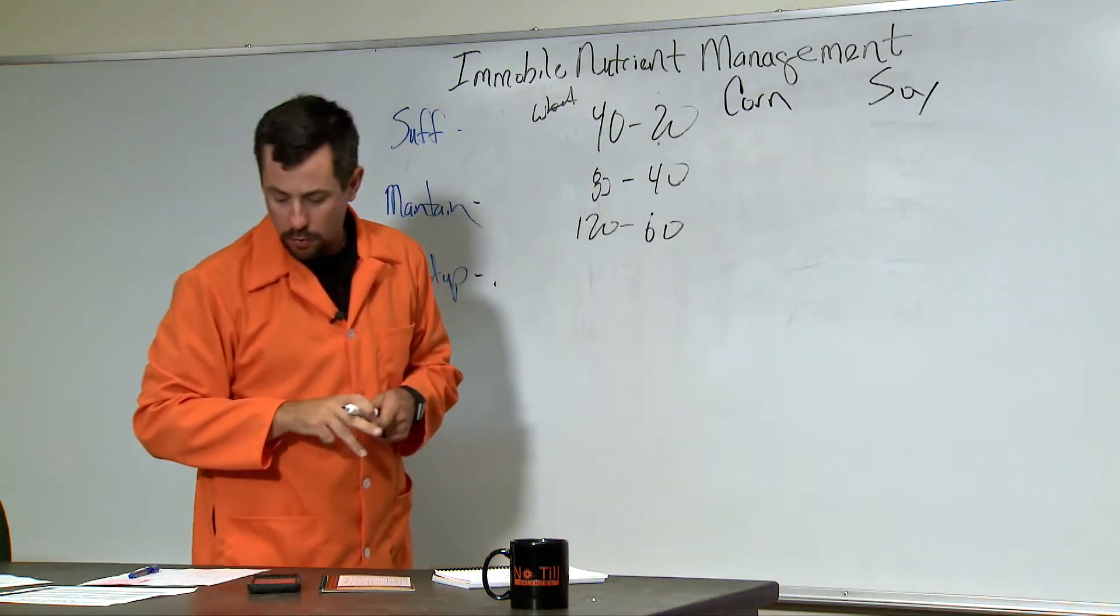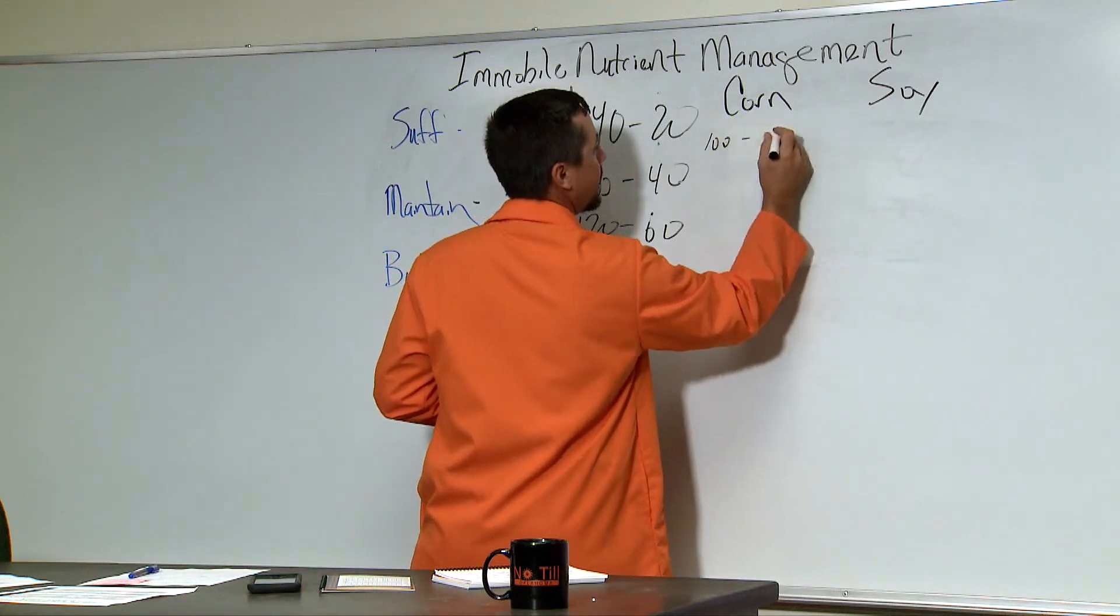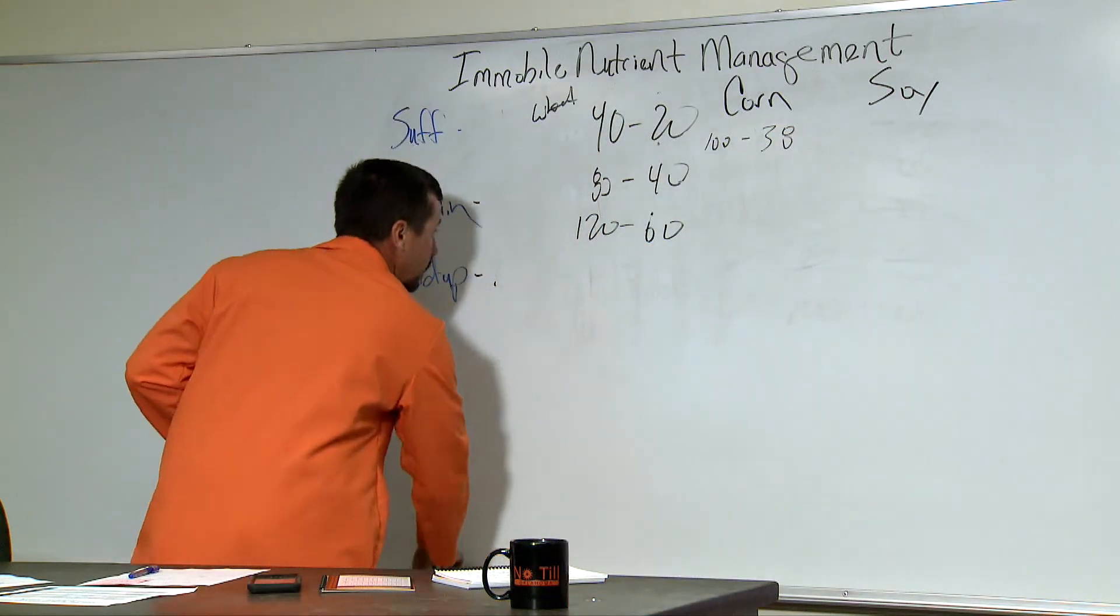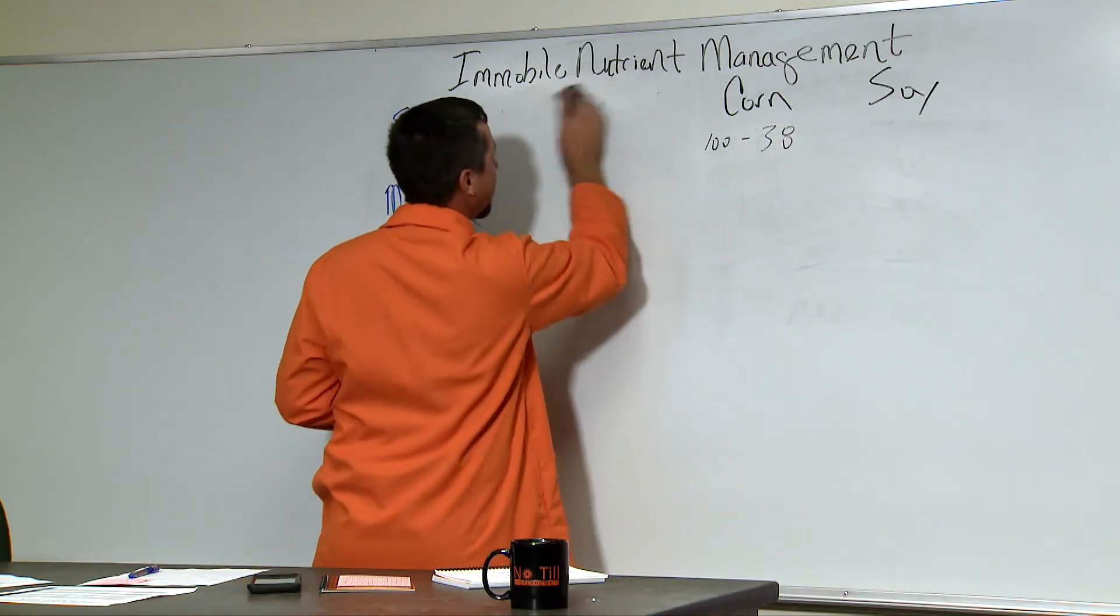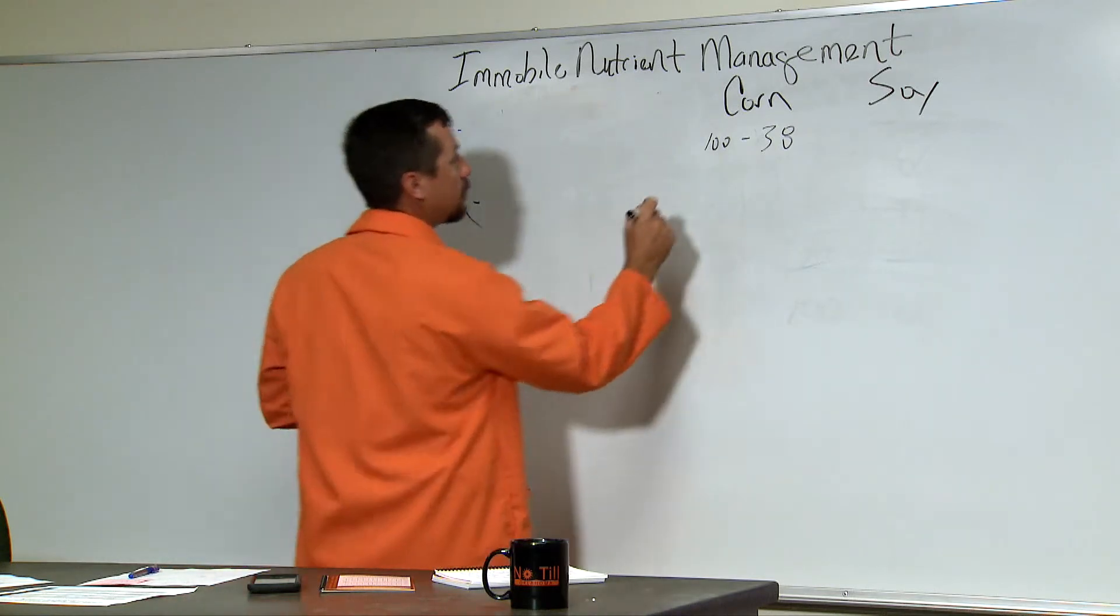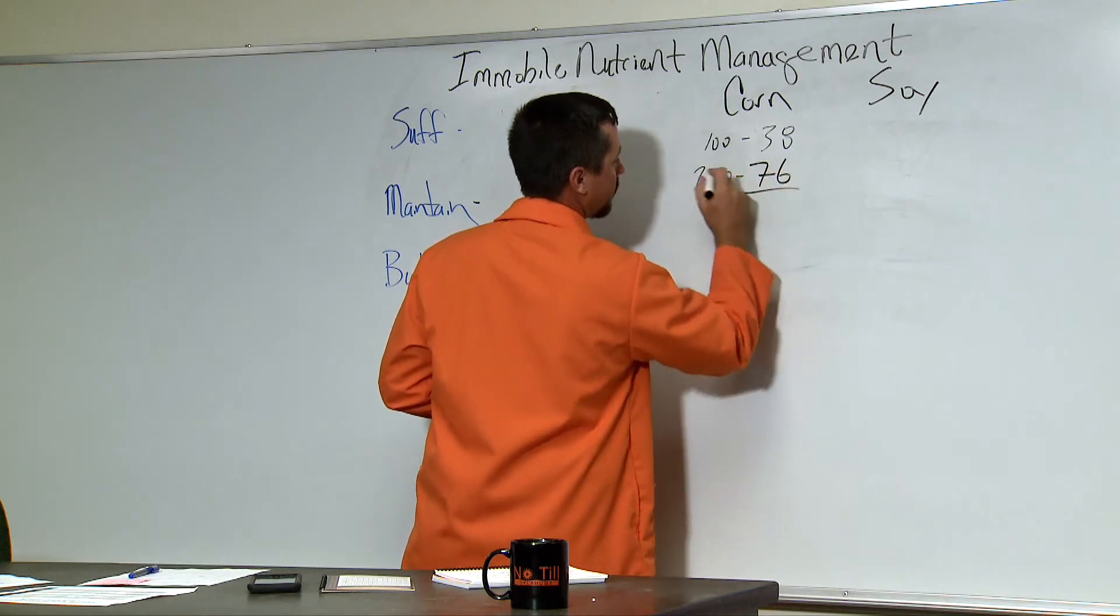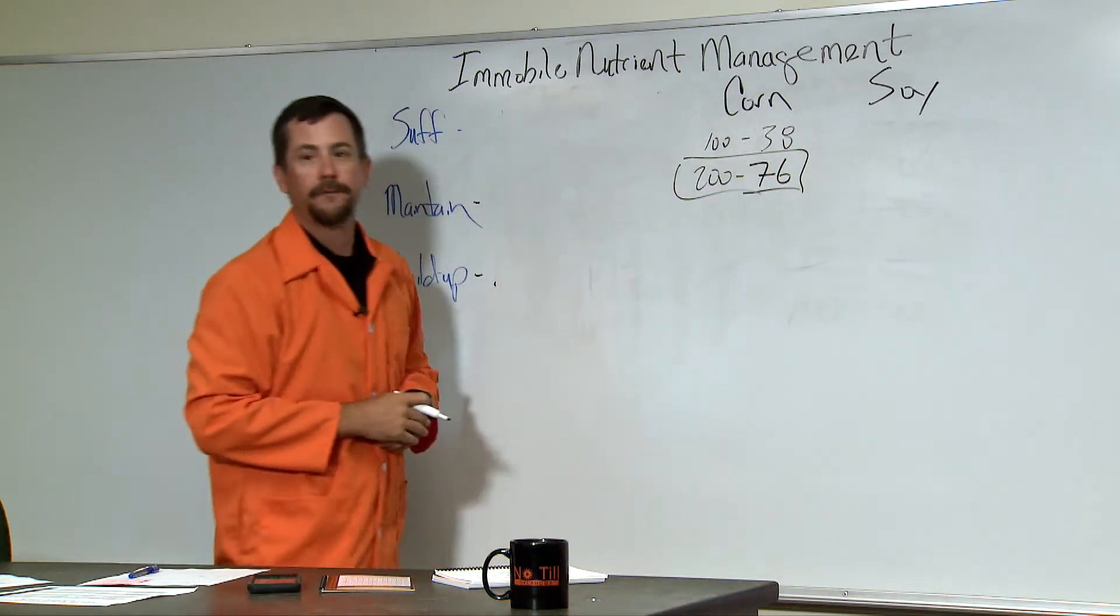So, if we look at a corn crop, a 100 bushel corn crop is going to remove 38 pounds and we start getting into the good irrigated corns and good dryland corn. If you think 100 bushel corn, a 200 bushel corn crop is going to remove 76 pounds. That's a lot of phosphorus.